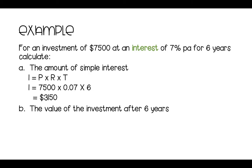Now we're going to find the value of the investment after six years. So this is your principal plus your interest. So that gives you 7,500 plus 3,150, which gives us $10,650.